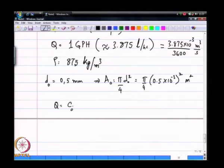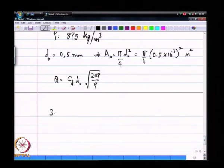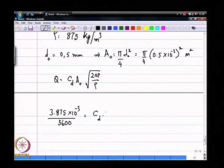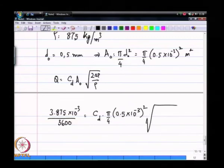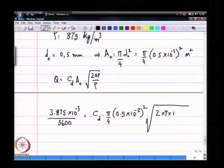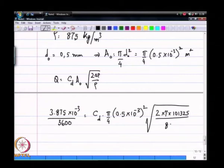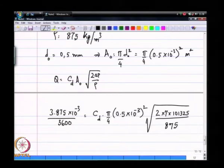Q in this same unit is 3.875 into 10 power minus 3 divided by 3600 m3 per second. So, my first step was to start by assuming an R0. I have done that. I have chosen a D0 of 0.5 mm. I can now calculate a CD. Q is 3.875 into 10 power minus 3 divided by 3600 equal to CD times. The supply pressure delta P is 7 bar. 7 bar is when converted to Pascals is 7 times 101,325 Pascals.